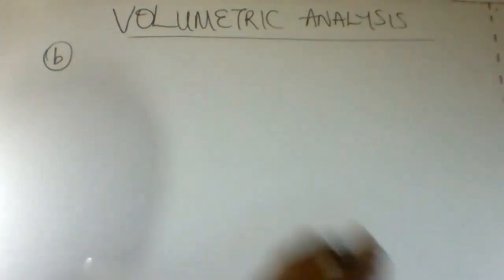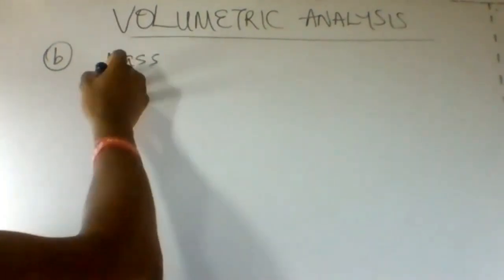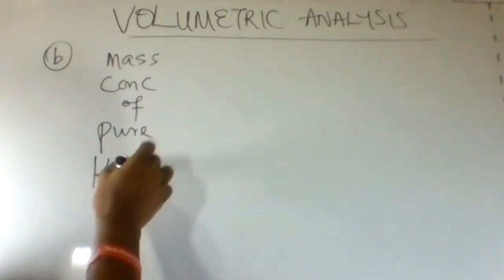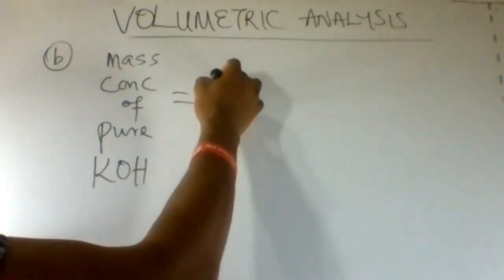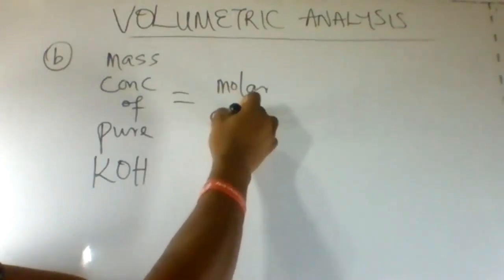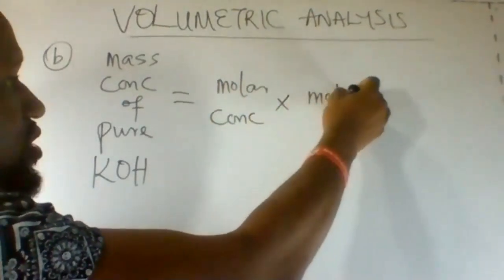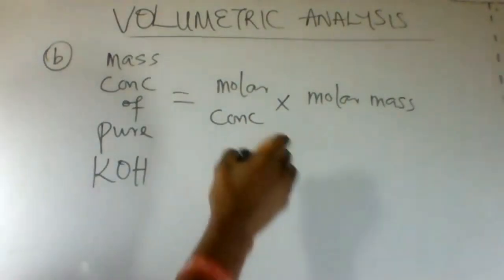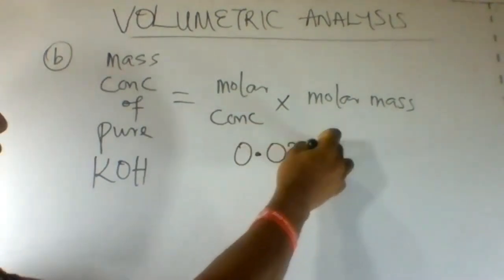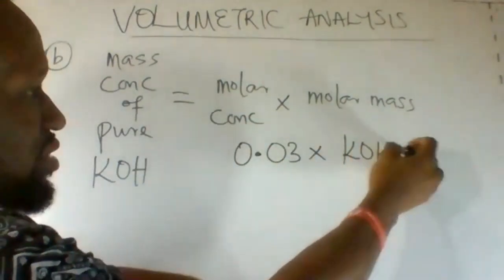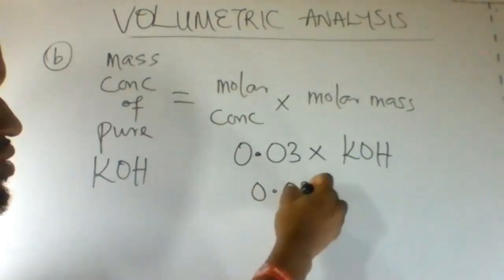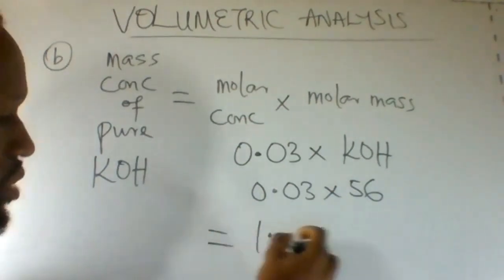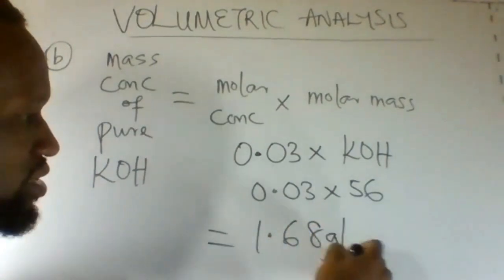Now, let's get the mass concentration of the pure KOH. We can do that by multiplying the molar concentration by the molar mass of KOH. Molar concentration is 0.03 multiplied by molar mass of KOH, which is 56. 0.03 multiplied by 56. Our answer is 1.68 grams per dm³.